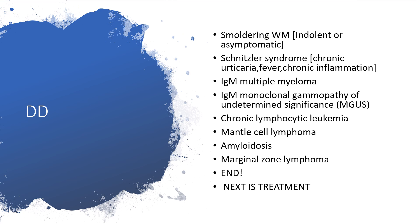For differential diagnosis, it might be smoldering Waldenström's macroglobulinemia — in that case it is asymptomatic or indolent. It might be Schnitzler syndrome, where someone will have chronic urticaria, fever, joint pains, or chronic inflammation. Remember, Waldenström's macroglobulinemia could have IgM that precipitates under cold temperatures like wintertime, and the individual would develop cryoglobulinemia. Features of cryoglobulinemia include urticaria and others, so Schnitzler syndrome could be a differential diagnosis.